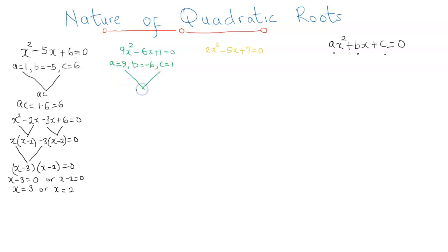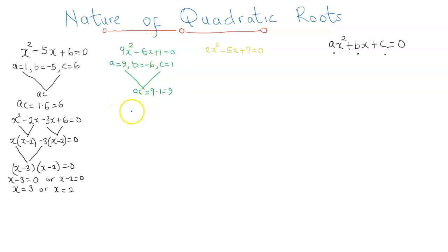As usual, we obtain the product ac, which is 9 times 1, that's 9. Then we find two numbers whose sum is b, which is negative 6, and whose product is 9. Having found those two numbers, we replace negative 6x with negative 3x and negative 3x, so the equation transforms to 9x squared minus 3x minus 3x plus 1 equal to 0.